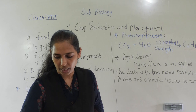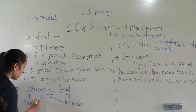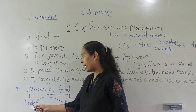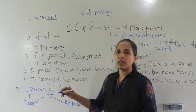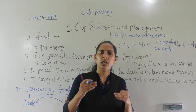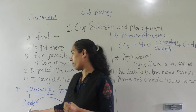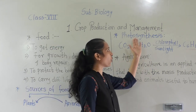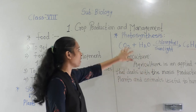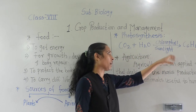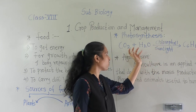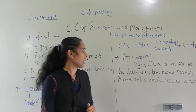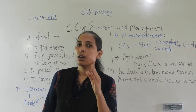Each and every organism depends on plants for their need of food. For example, herbivores eat the plants, and herbivore animals are eaten by carnivore animals. So in this way, each and every animal directly or indirectly depends on plants for their food. Plants make their own food by the process called photosynthesis, using carbon dioxide and water in the presence of chlorophyll and sunlight, producing carbohydrates and releasing oxygen.